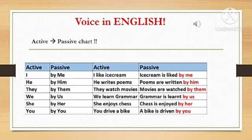For she — by passive conversion we use by her. For example: She enjoys chess. By passive conversion: Chess is enjoyed by her. Next one is you — by passive conversion we use by you. For example: You drive a bike. By passive conversion: A bike is driven by you.